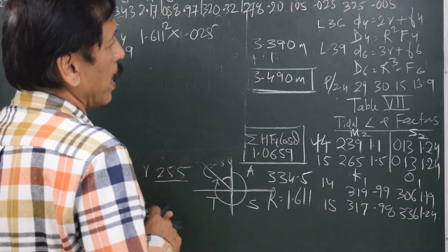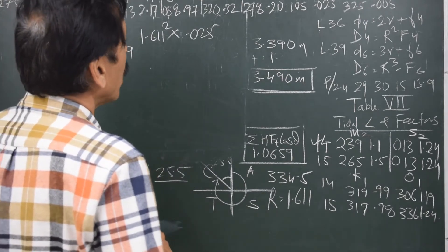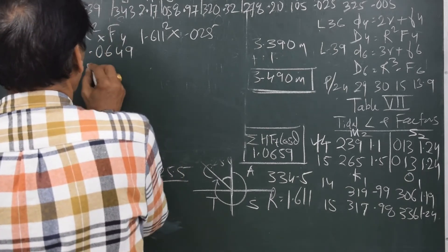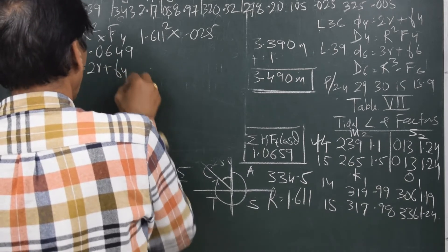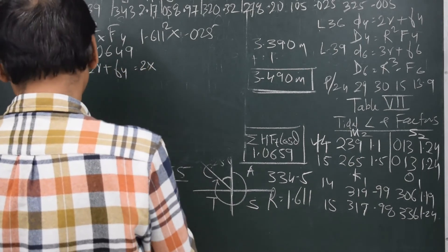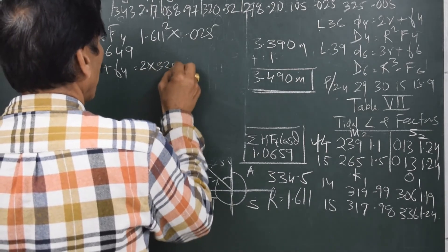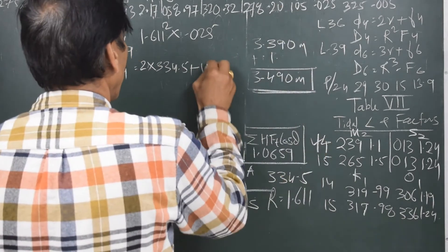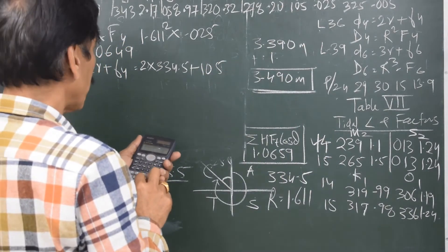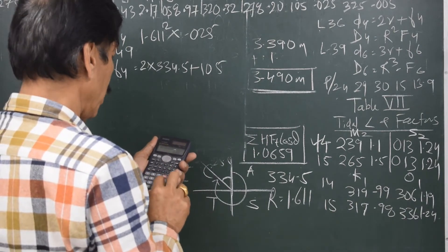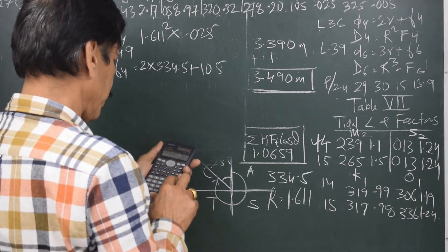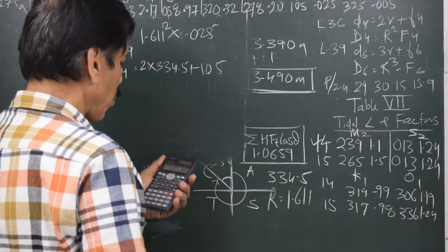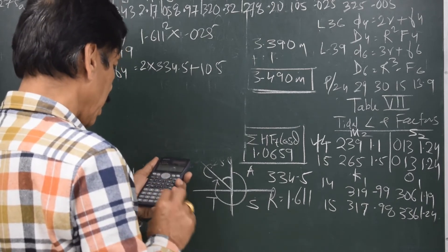Let us see what is small d4. Small d4 is 2R plus F4. I write the formula here: 2R plus F4 equals 2 times 334.5 plus F4, which is 105. So it is 2 times 334.5 plus 105, that is 774. I can keep it as 774 or remove 720 from it, that gives me 54 degrees.